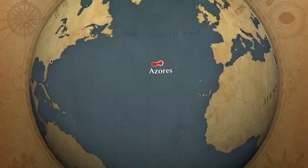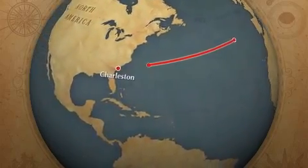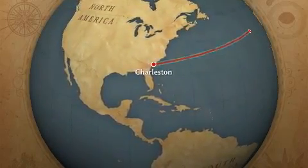First, some history. If you wanted to sail from the Azores to Charleston back in the day, the best way to do it would be to follow a great circle line, but if you didn't know how to calculate your longitude, that could be dangerous.